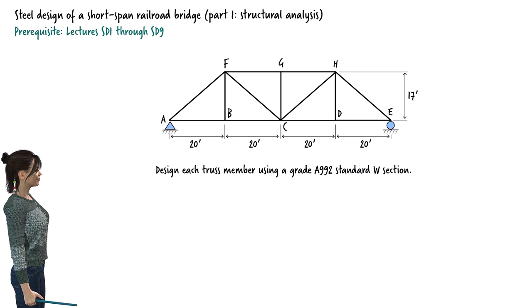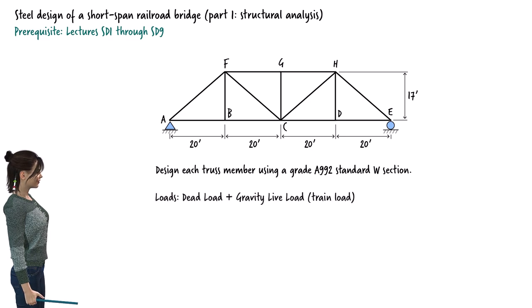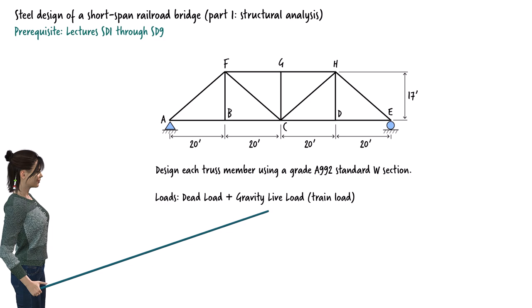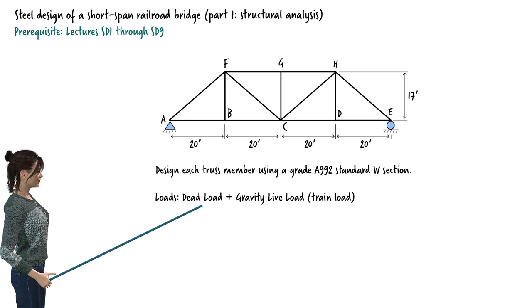Although railroad bridges are subjected to a variety of loads, in this lecture we will consider only two types of loads: gravity live load and dead load.